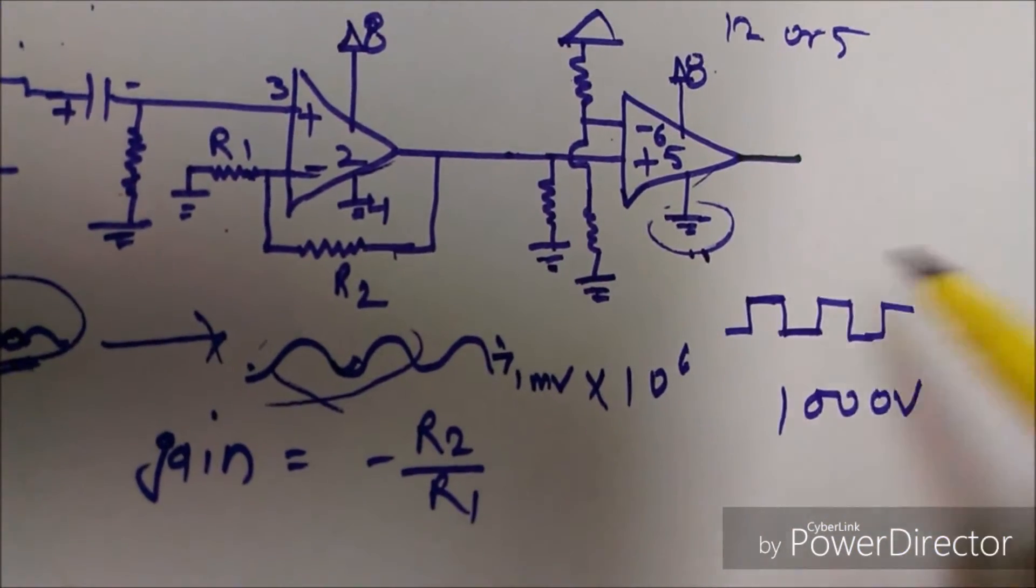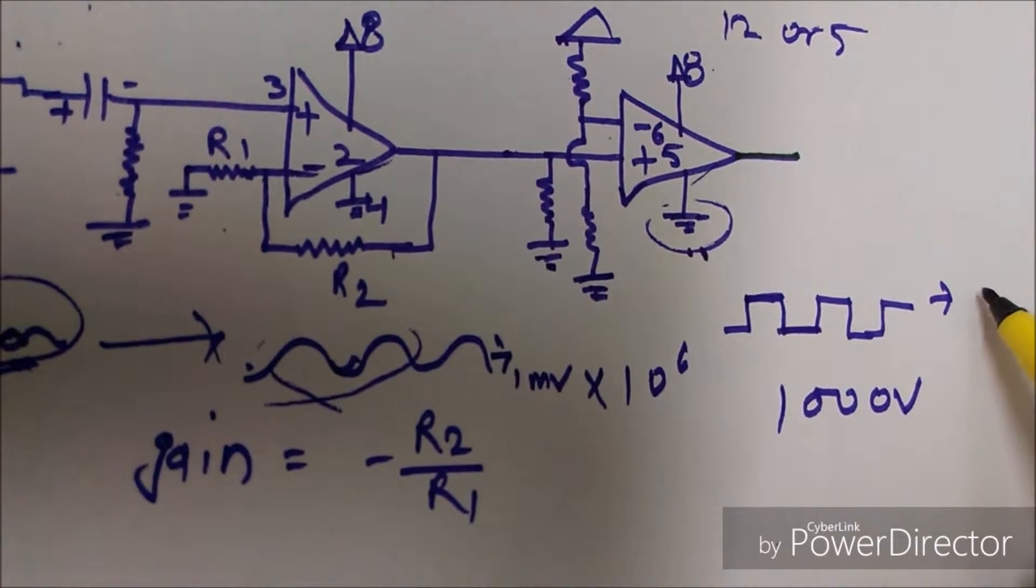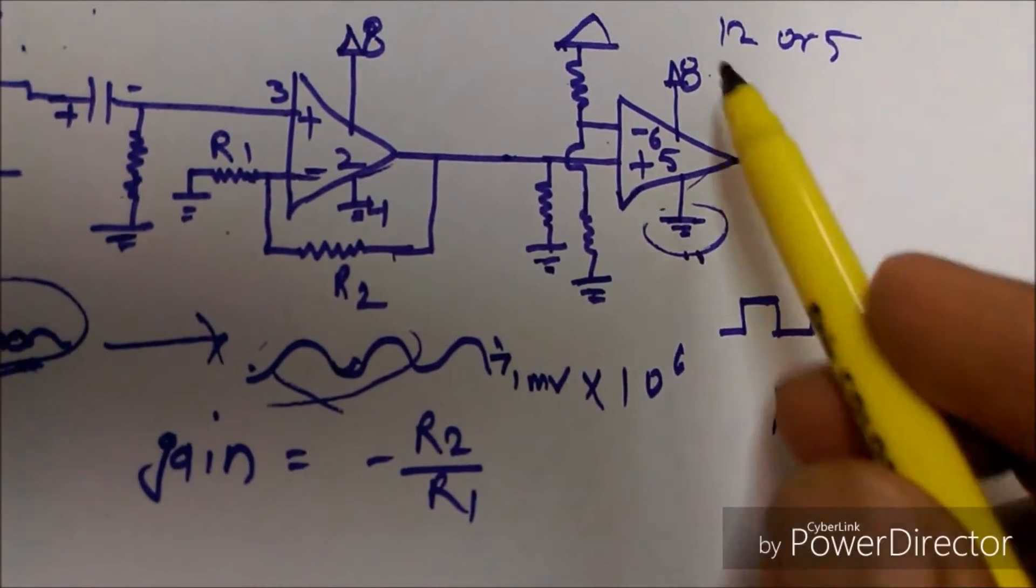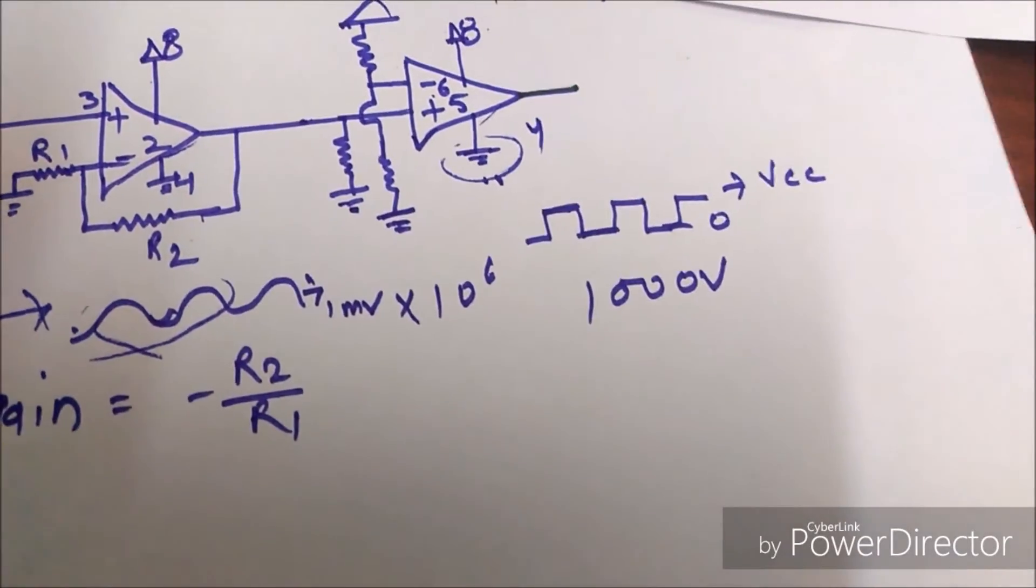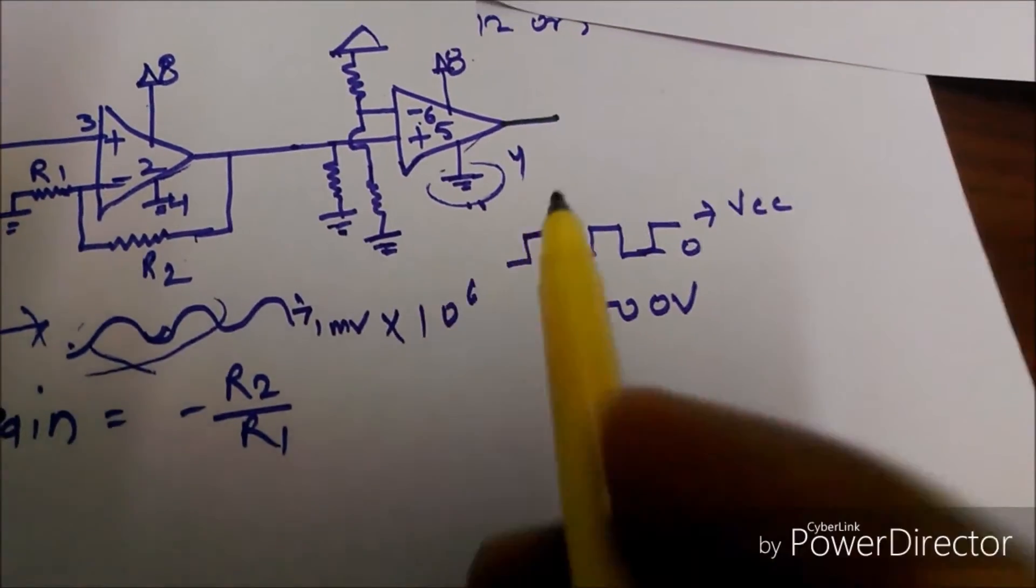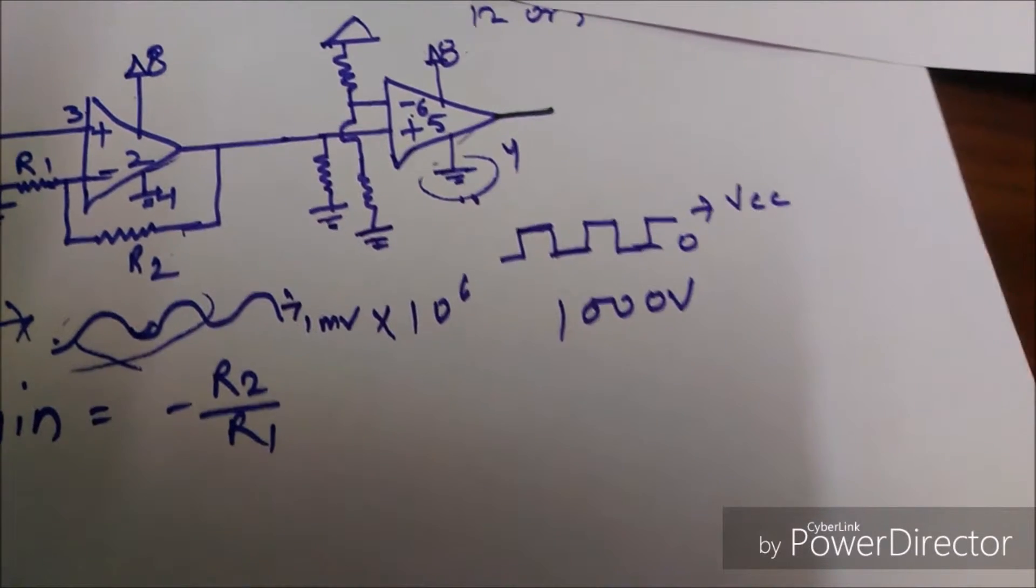So its maximum voltage will be VCC and minimum will be zero. And further, this output is given to the toggle switch. Let's see its circuit.